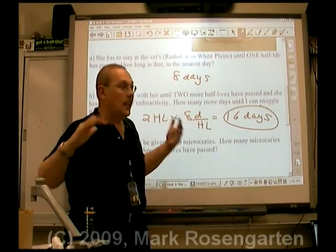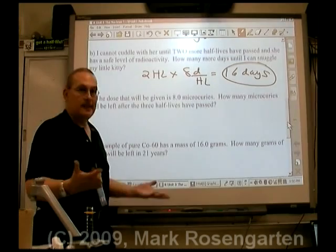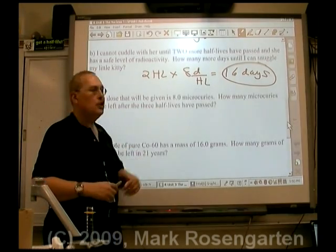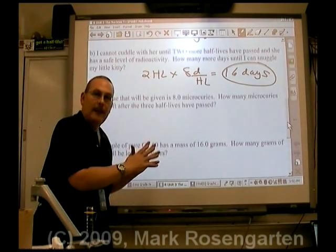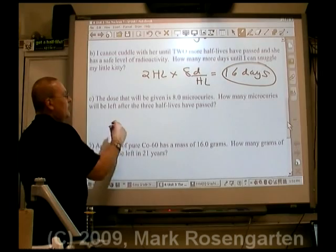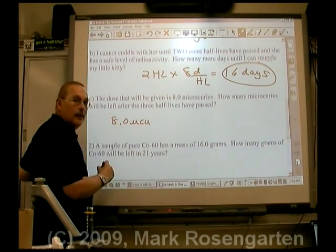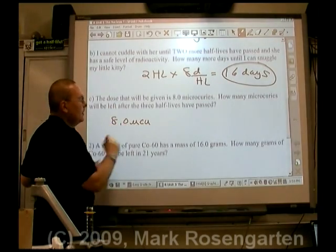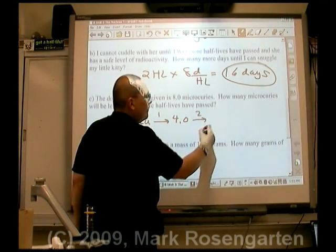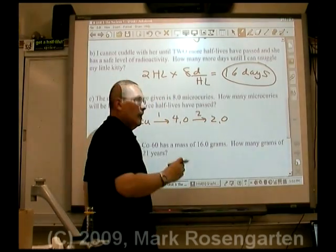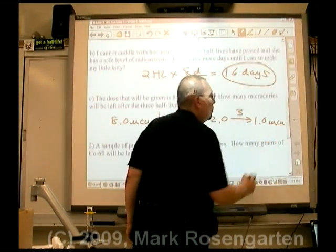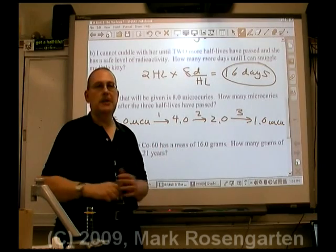Although it could be worse — at least this takes care of the problem. A standard dose for a cat her size, about 10 pounds, is 8.0 microcuries of radiation. How much will be left after three half-lives — the one she had to stay there, and the two before I can cuddle her? We have 8.0 microcuries now. After the first half-life: 4.0 microcuries. After the second: 2.0 microcuries. After the final half-life: 1.0 microcurie of radiation left that she can transmit to me, her cuddler.